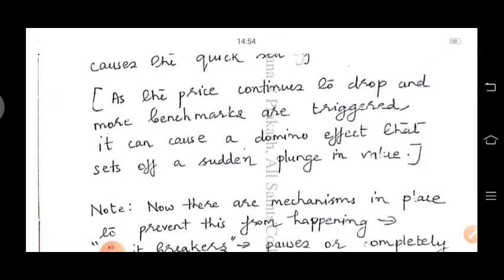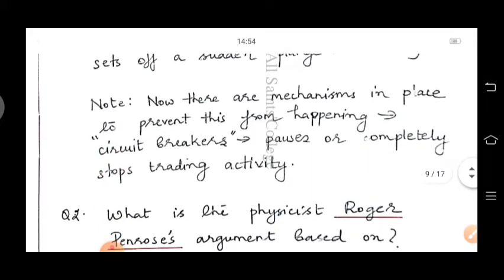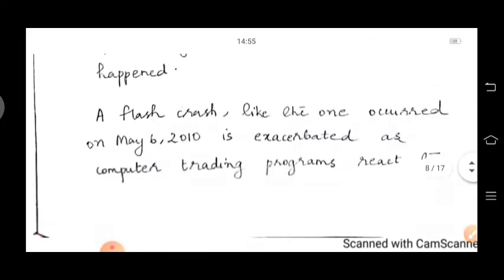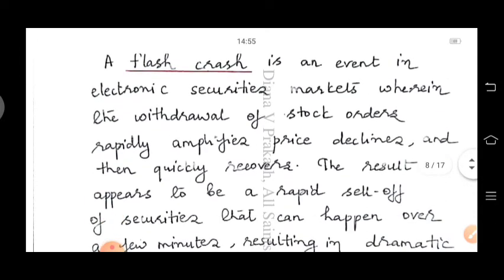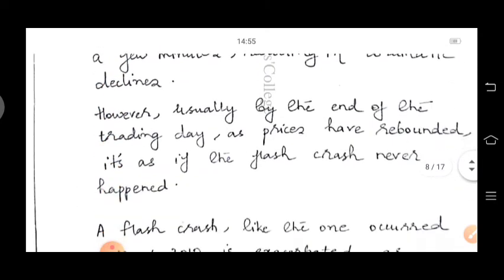As the price continues to drop and more benchmarks are triggered, it can cause a domino effect — large-scale selling sets off a sudden plunge in value. There are now mechanisms in place, such as circuit breakers, that pause or completely stop trading activity when this happens. However, in 2010, the flash crash occurred because human beings were not present and the sell-off was managed entirely by computerized systems.